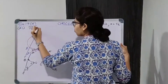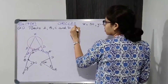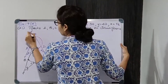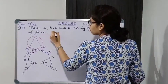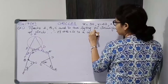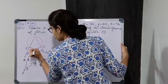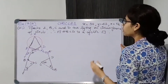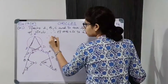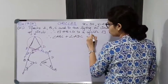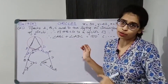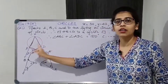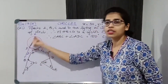Now writing the formal solution: points A, B, C and D are lying on the circumference of the circle. Therefore quadrilateral ABCD is a cyclic quadrilateral. Therefore angle ABC + angle ADC = 180 degrees — opposite angles of a cyclic quadrilateral are supplementary. You must write this reasoning because it is not directly given that ABCD is a cyclic quadrilateral.